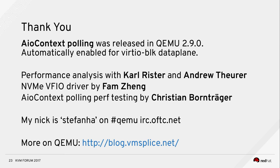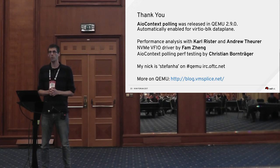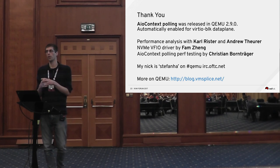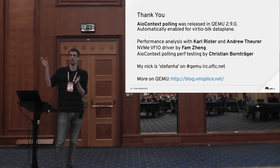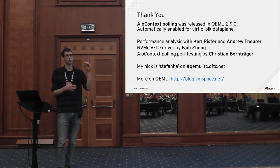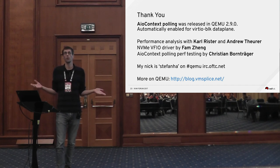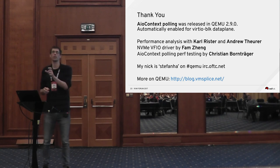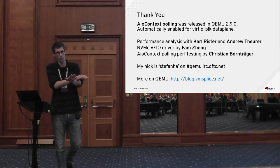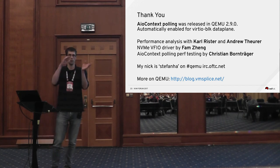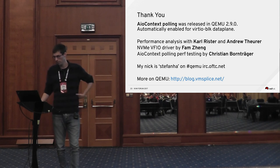On the status: AIO context polling was already merged and is in QEMU 2.9. It's automatically enabled when you use VirtIO block data plane — when you use VirtIO block with IO threads. It's not automatically enabled in the main loop. The reason is that if there are types of file descriptors in the event loop that we cannot poll, we disable polling entirely — we don't want to add latency to file descriptors that don't support polling. So if you want to use this feature, please use IO thread, put your VirtIO block or VirtIO SCSI device there, and you'll get polling.